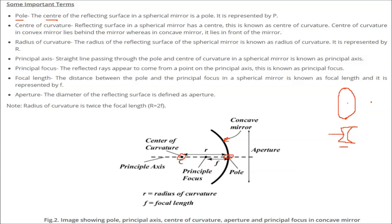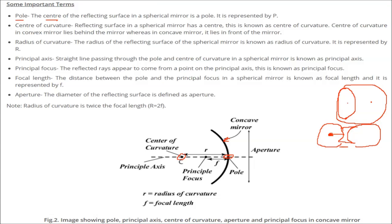What is the radius of curvature? A spherical mirror is part of a circle, so you can make a full circle out of it, and there has to be some center. The radius of this reflecting surface of the spherical mirror is known as the radius of curvature. For this concave mirror, the radius of curvature is represented by R.